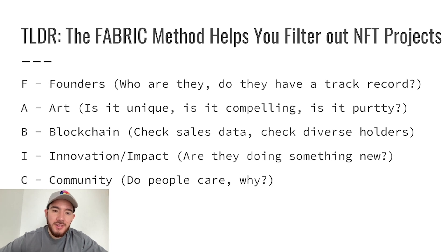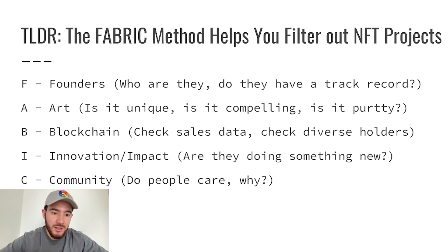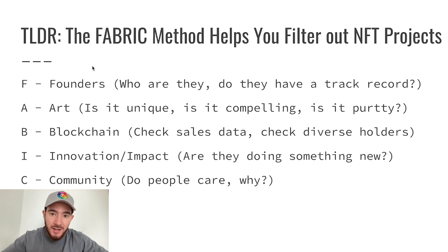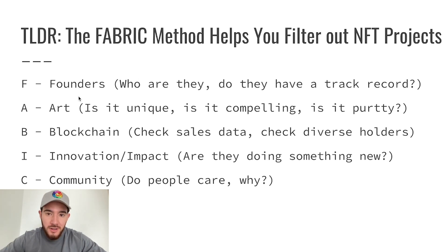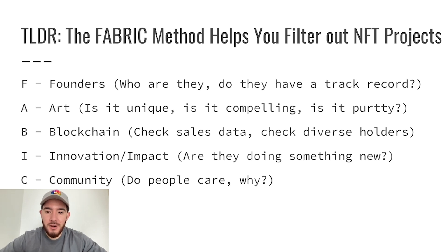The FABRIC method helps you filter out NFT projects by going through five different categories. The first one is F, which stands for Founders — who are they, do they have a track record, why are they making NFTs? These are all important things to ask when considering the founder. The second one is A for Art — is it unique, is it compelling, is it pretty? This isn't the most important part of investing in NFT projects.